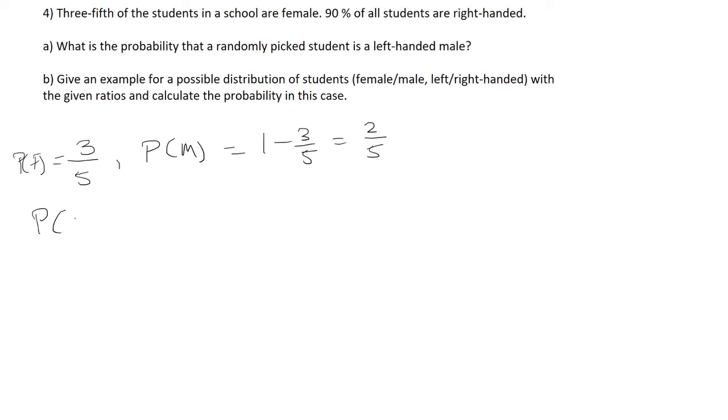The probability that a person is right-handed is 90%. That means the probability that a person is left-handed is one minus 0.9, which is 0.1.